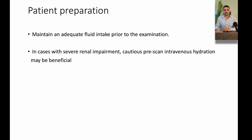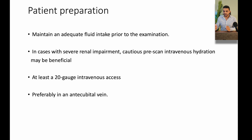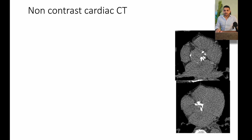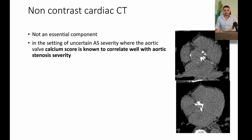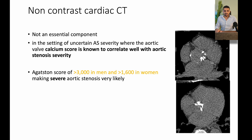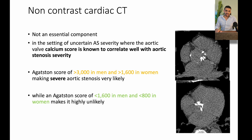How do we prepare our patients? We need to maintain adequate fluid intake. For severe renal impairment, hydration must be done before the CT and kidney function followed up afterwards. A 20-gauge cannula should be placed, preferably in the antecubital vein rather than a hand vein. The CT first performs a non-contrast scan for calcium scoring, which is not essential for all examinations but gives an idea about the aortic valve and its severity. A calcium score greater than 3,000 in men or 1,600 in women indicates severe aortic stenosis is most likely, while scores below 1,600 in men or 800 in women make severe stenosis less likely.